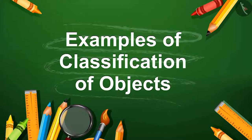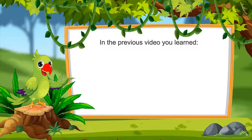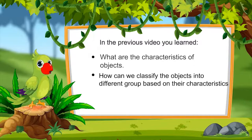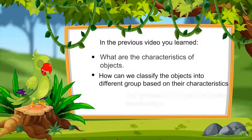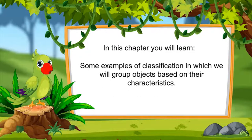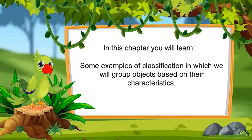Tools of Classification of Objects. In the previous video, you learned what the characteristics of objects are, and on the basis of characteristics, how we can classify objects and make different groups of them. You also learned that this process of grouping based on characteristics is called classification. In this video, we will see some examples of classification in which we will group objects based on their characteristics.